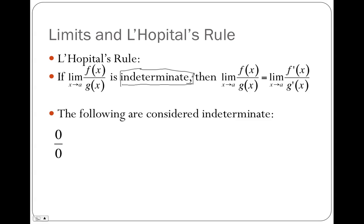What are the indeterminate forms? Last year you learned zero over zero, and that's probably the only one you learned. If you get zero over zero, you can take the derivative of the numerator, the derivative of the denominator, and reevaluate. But there are other indeterminate forms. The second one is infinity over infinity — that is also indeterminate. Infinity over infinity is not necessarily one; sometimes it's zero, sometimes it's infinity, sometimes it's 12. We would perform the L'Hôpital operation and reevaluate.